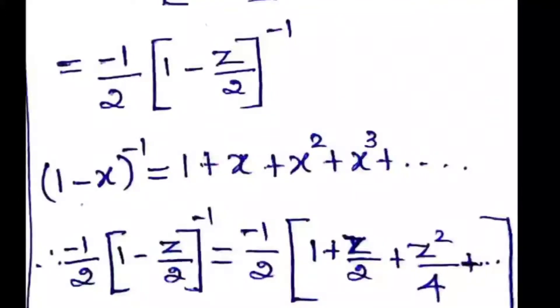So here it is -1/2 into (1 - z/2)^(-1). The denominator we have taken into the numerator. This is (1-x)^(-1), so the expansion for this is 1 + x + x^2 + x^3, and it goes on.